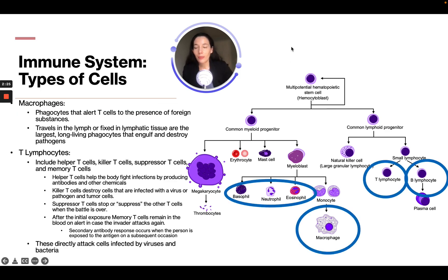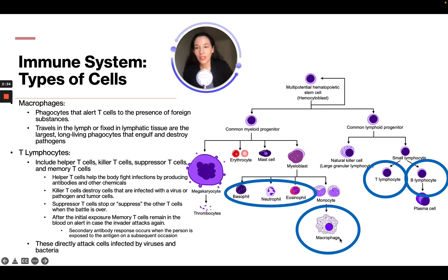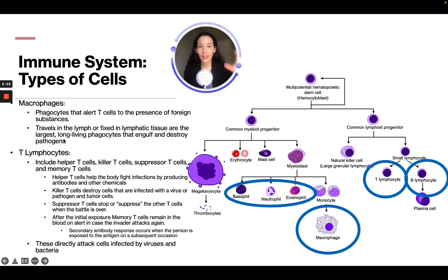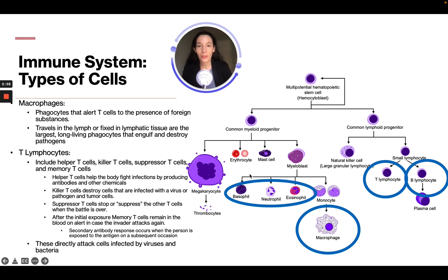Let's talk about macrophages. These are phagocytes that alert T cells to the presence of foreign substances. They travel in the lymph or are fixed in the lymphatic tissue and are the largest long-living phagocytes that engulf and destroy pathogens. On the exam, if they're asking about a type of cell that engulfs and destroys the pathogen, it's going to be the macrophages.